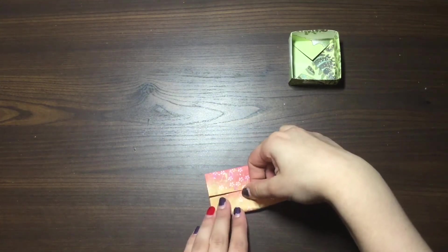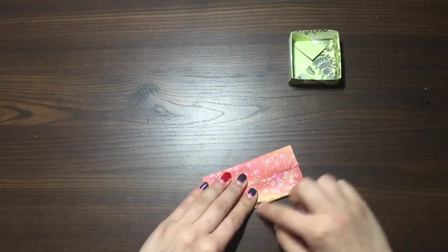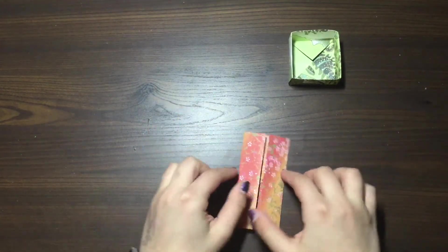And we're going to do the exact same thing to this side here. So you're going to take the bottom, and you're going to fold it right to the middle, so it meets up with the other flap. And once again, we're making sure we've got nice creases.